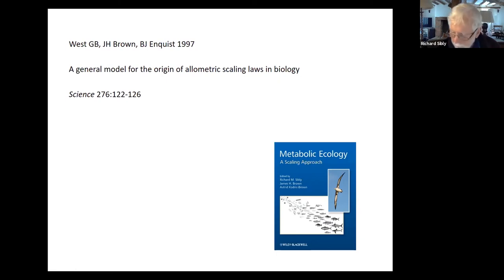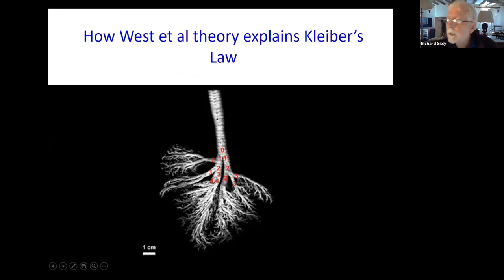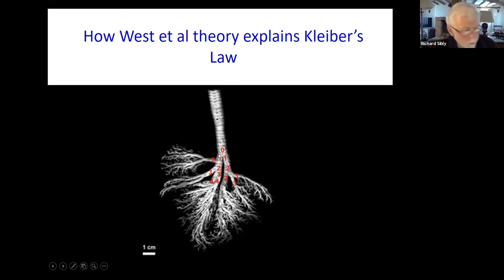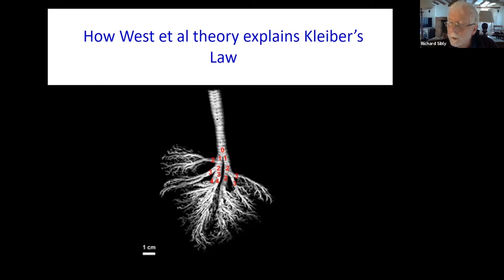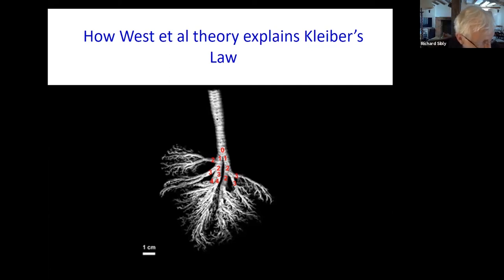How does this theory work? It's essentially very simple. This shows a lung — you've got the windpipe and it splits, splits again, all the way down to the alveoli, where oxygen diffuses across into the blood vessels. The business end is down at the alveoli, but you've got all this branching infrastructure, and that takes up a lot of space. The bigger you are, the more infrastructure there is. If you're very tiny, you don't have to have all this branching. In their theory, it's that which gives rise to Kleiber's Law.